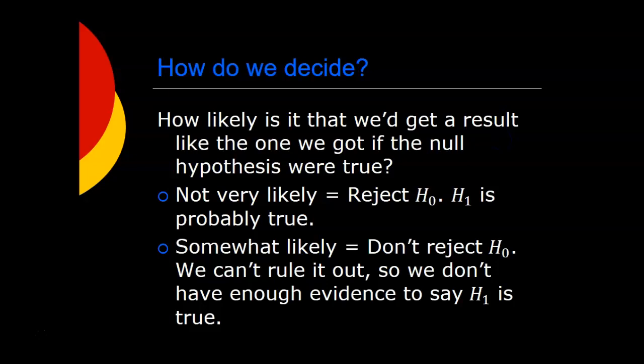So how do we make that decision — how do we decide whether or not to reject the null hypothesis? It's based on the question of how likely is it that we would get a result like the one we got if the null hypothesis were true. If it's not very likely, then we reject the null hypothesis, meaning the alternative hypothesis is probably true and there probably really is a difference. If it's somewhat likely, then we don't reject the null hypothesis — we're not saying we're sure it's true, we're just saying we can't rule it out, so we don't have enough evidence to say there's a difference.